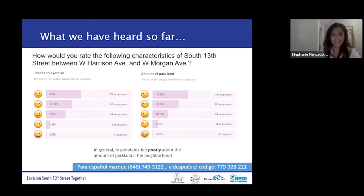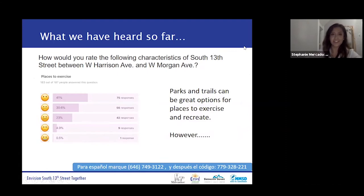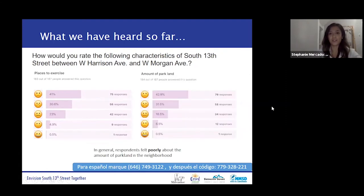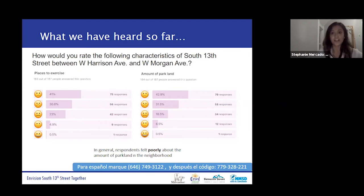My name is Stephanie Mercado and I'm working with 16th Street Community Health Centers, Department of Environmental Health. This segment is focused on what we've heard thus far. We have a survey circulating through the pandemic and have gotten around 200 responses. The results you're seeing are focused on green spaces in the neighborhood — specifically parks and places to recreate, which will be a lot of our discussion tonight. When asked how respondents would rate the characteristics of South 13th Street between West Harrison Avenue and Morgan Avenue, we saw that in general respondents felt poorly about the amount of parkland in the neighborhood.